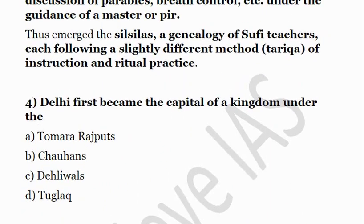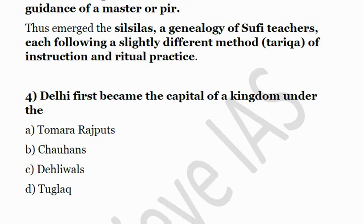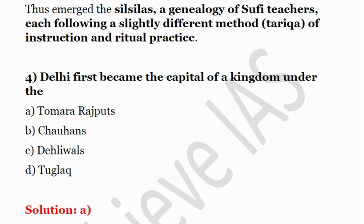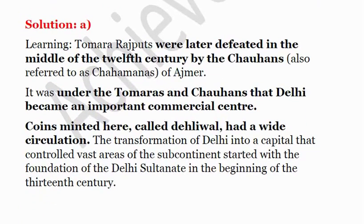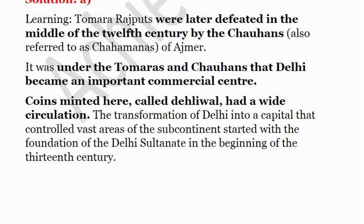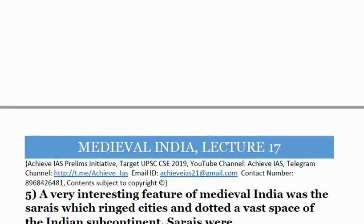Fourth question: Delhi first became the capital of a kingdom under — A) Tomara Rajputs, B) Chahamanas, C) the Tughluqs, D) the Lodhis. The correct answer is A — Tomara Rajputs. Delhi became the first capital under the Tomara Rajputs. After them, the Chahamanas defeated the Tomaras and captured Delhi. Delhi became an important center of commerce, trade, and power with the foundation of the Delhi Sultanate in the 13th century.